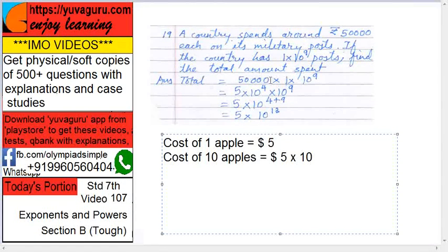So, 50,000, make it 5 into 10 raise to 4 into 10 raise to 9. So it becomes 5 into 10 raise to... 10 is the common base, 4 plus 9 is 13. So, 5 into 10 raise to 13, that much rupees.